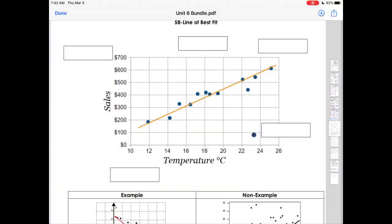So line of best fit, I want to break down a scatterplot with a line of best fit a little bit more to each of the parts. Sales is a variable, that's one of the things we're talking about. The other variable is temperature.